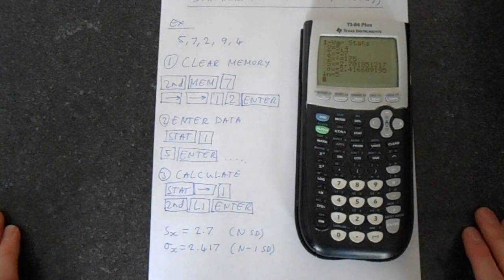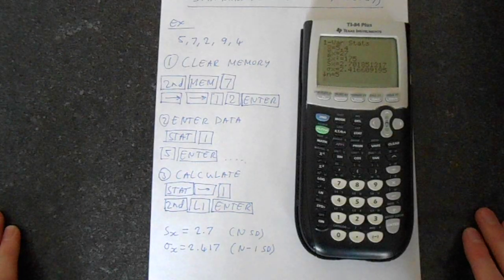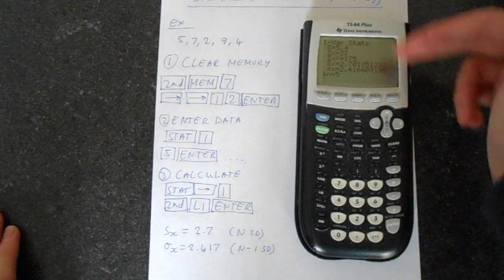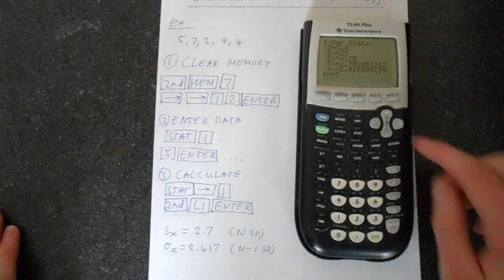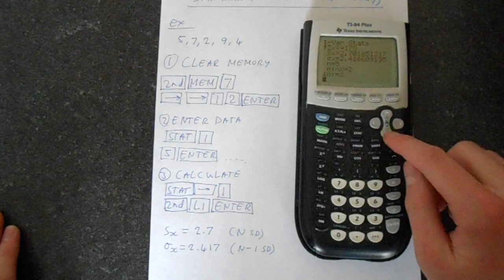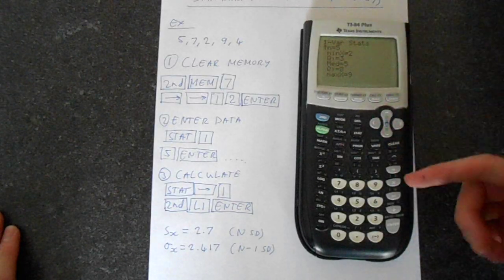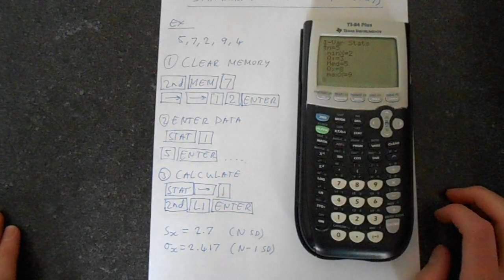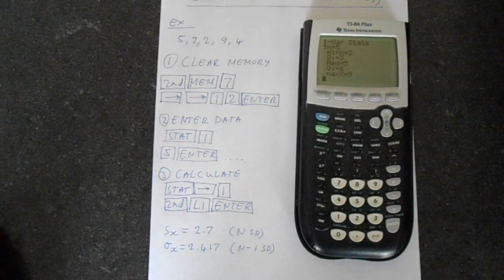So there you go. That's a basic run through of how to do standard deviation on your TI-84 plus and a little bit of other statistics. And if you go down there's more here in case you should need that. Hopefully this has been helpful to you and thank you for watching.